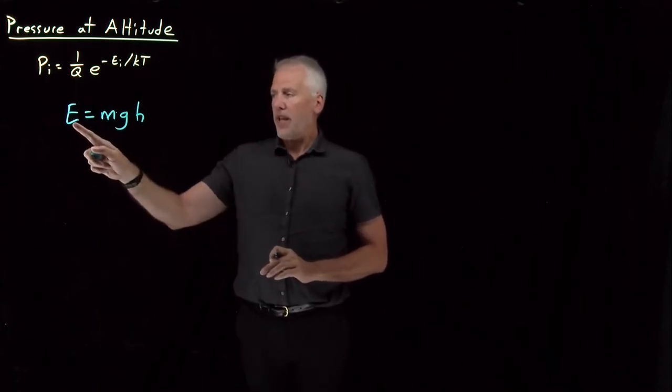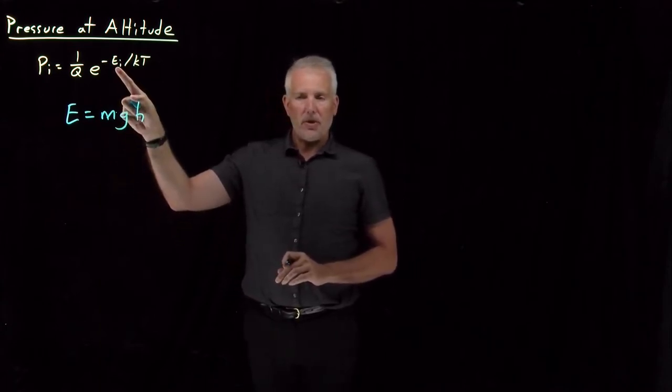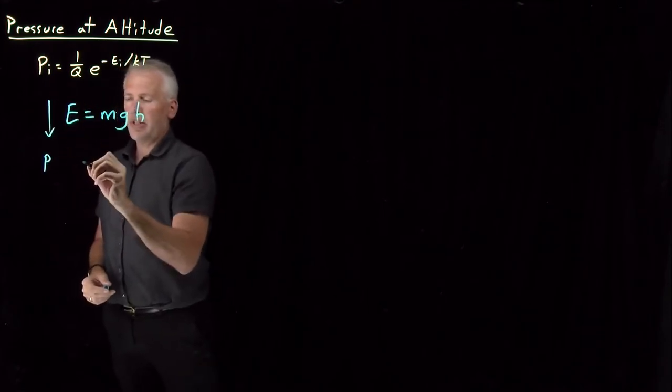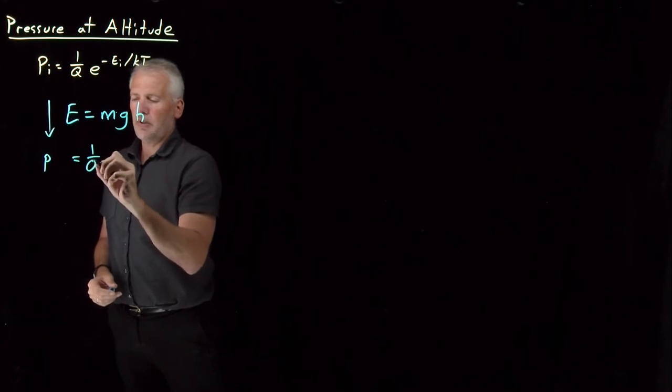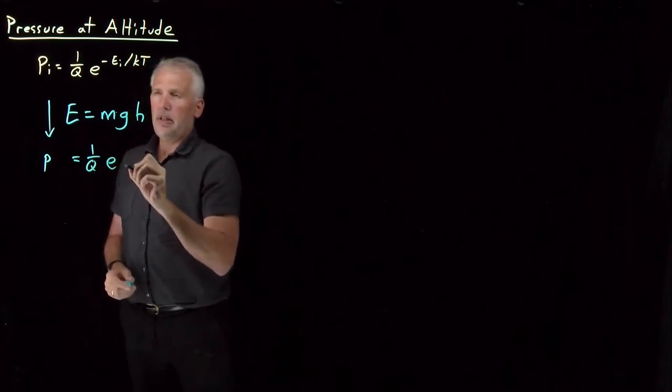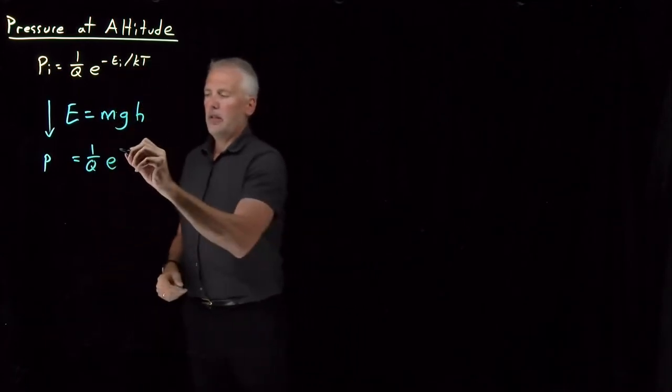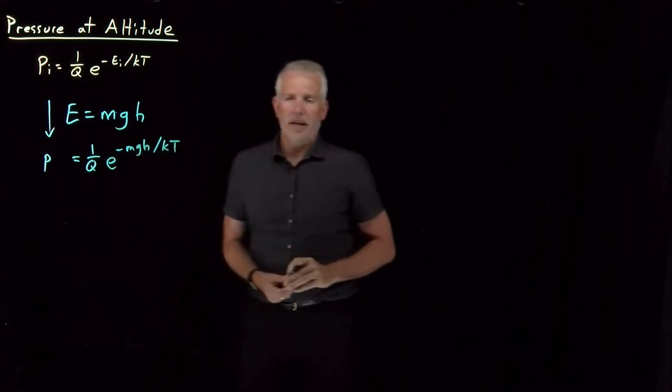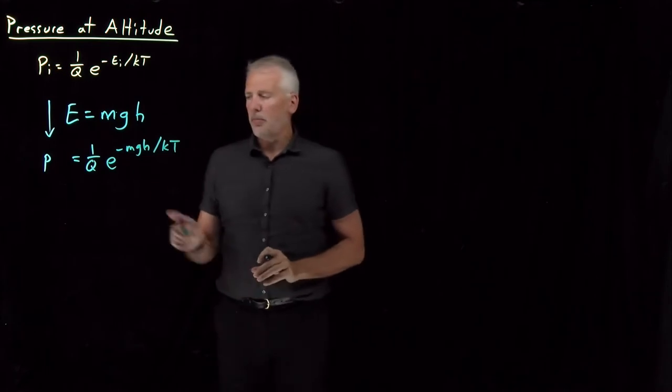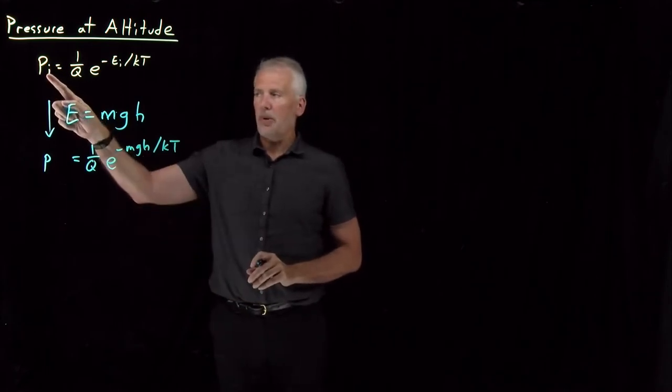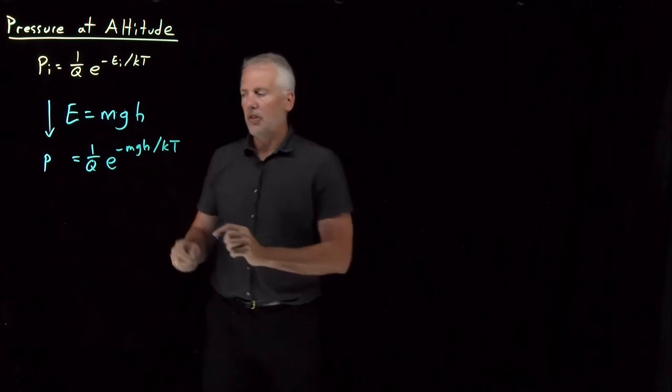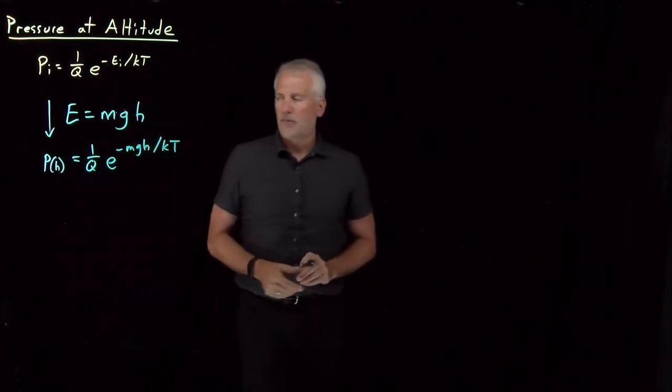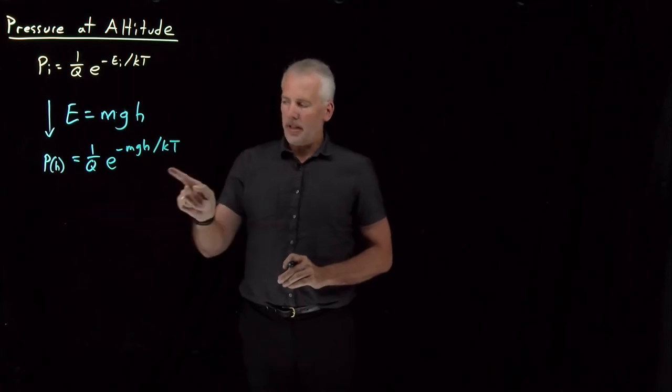So if I use that as the description of the energy that we're talking about, the Boltzmann expression then becomes the probability looks like 1 over q times e to the minus energy. Energy is m times g times h if we're talking about gravitational energy, and I need to divide that by kT. So that's the probability of being at that height in a gravitational well.